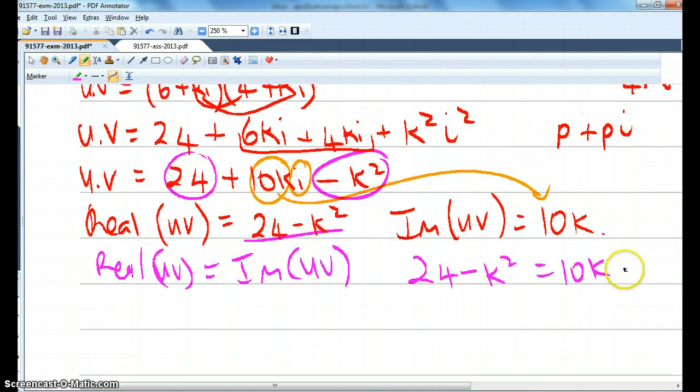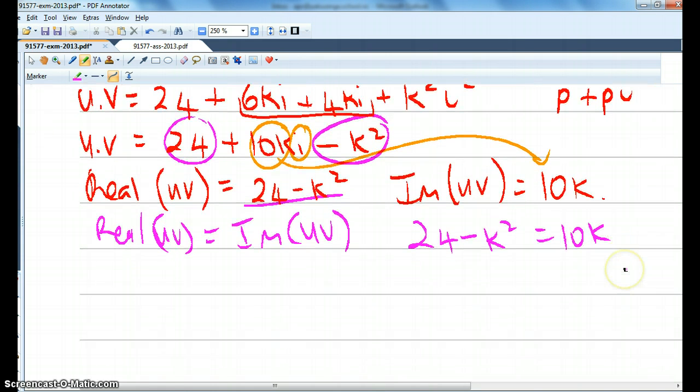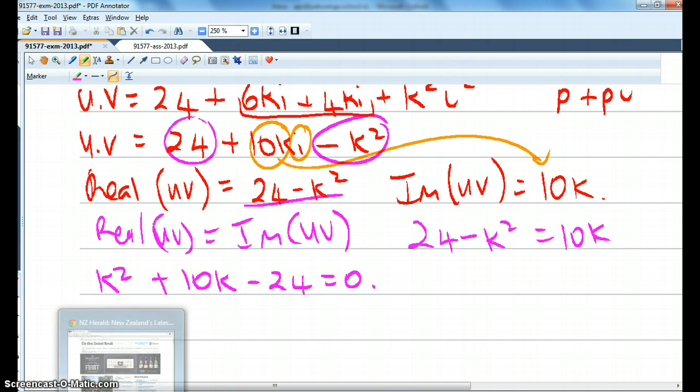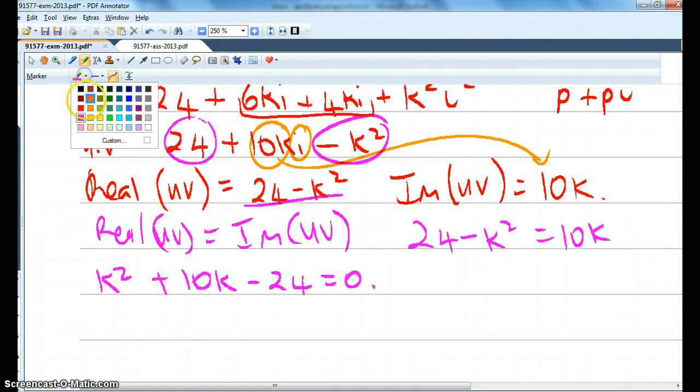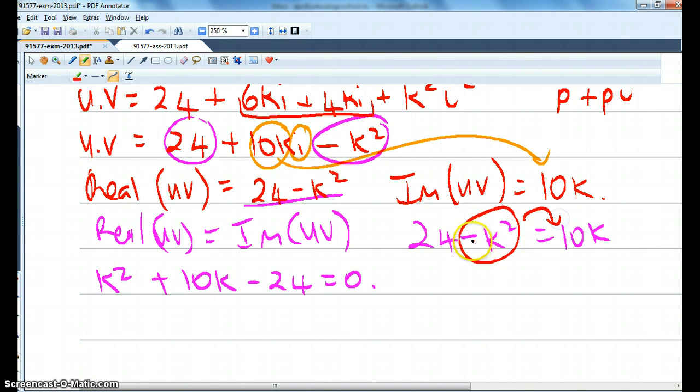Now, let's rearrange that. It's going to be k squared plus 10k minus 24 equals 0. I'll just check what I did then, because I'm very prone to silly mistakes. So that went to that side and became positive. That stayed there and that went to that side and became negative. And the 0's on that side. That's all sweet. So, cool.